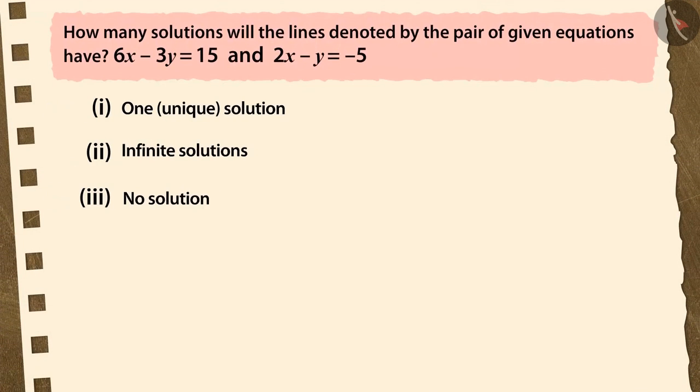How many solutions will the line denoted by the pair of equations 6x minus 3y equals 15 and 2x minus y equals minus 5 have? Pause the video and try to solve this question.